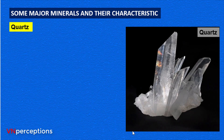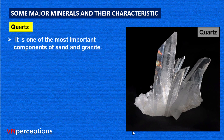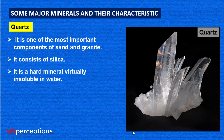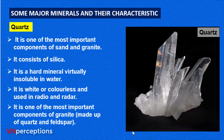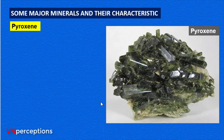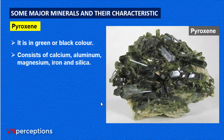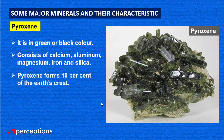Next is quartz. It is one of the most important components of sand and granite. It consists of silica and is a hard mineral, virtually insoluble in water. It is white or colorless and is used in radio and radar. Granite is one of the most important rocks, made up of quartz and feldspar. Then pyroxene — it is green or black in color, consists of calcium, aluminium, magnesium, iron and silica. Pyroxene forms 10% of the earth's crust and is commonly found in meteorites.